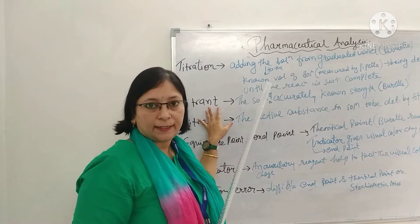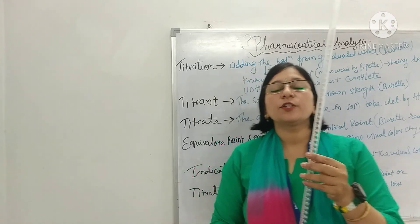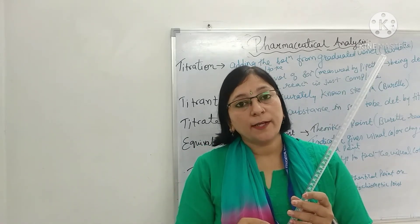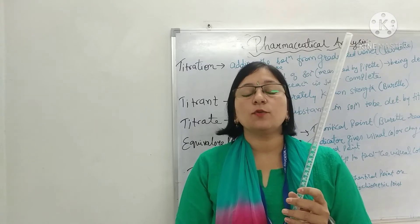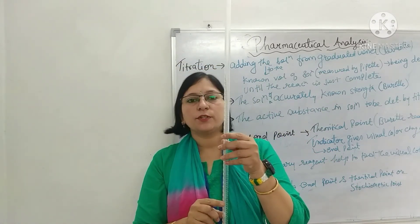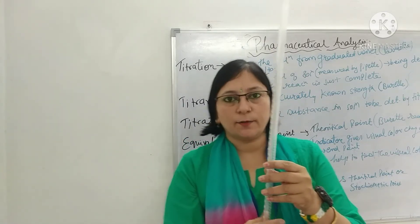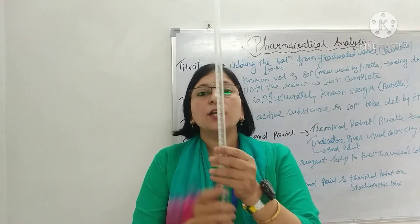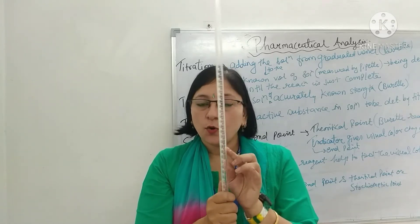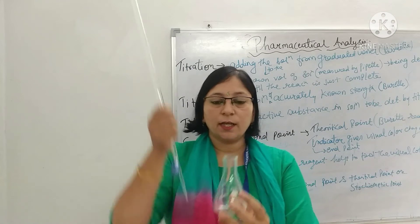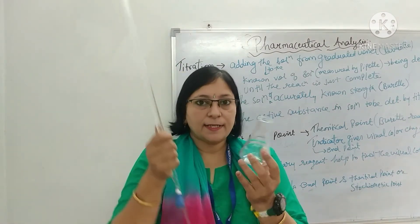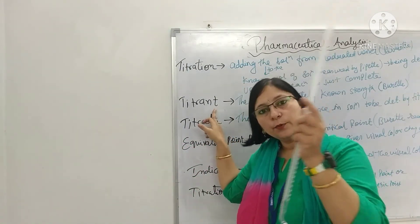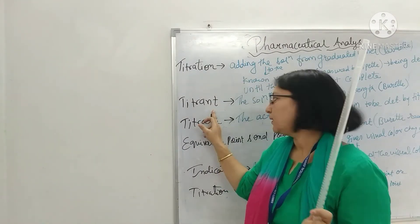Now if we talk about the titrant — who is titrant? The solution of known strength: 0.1 normal, 0.5 molar, 0.5 normal — मतलब normality या molarity — जब हमको पता है कि हमने कितनी strength की solution add की, जैसे 0.1 N NaOH या 0.5 M — तो जो भी burette में होगा वो होगा titrant। Known strength का solution जो burette में है उसको titrant कहेंगे।